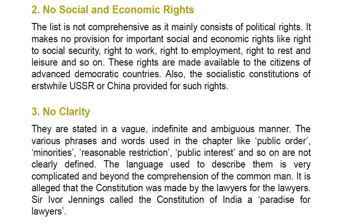Second, No Social and Economic Rights — the list is not comprehensive as it mainly consists of political rights. It makes no provision for important social and economic rights like right to social security, right to work, right to employment, right to rest and leisure, etc. These rights are made available to citizens of advanced democratic countries, and the socialistic constitutions of erstwhile USSR and China provided for such rights. Third, No Clarity — they are stated in a vague, indefinite and ambiguous manner. Phrases like 'Public Order', 'Minorities', 'Reasonable Restriction' and 'Public Interest' are not clearly defined.